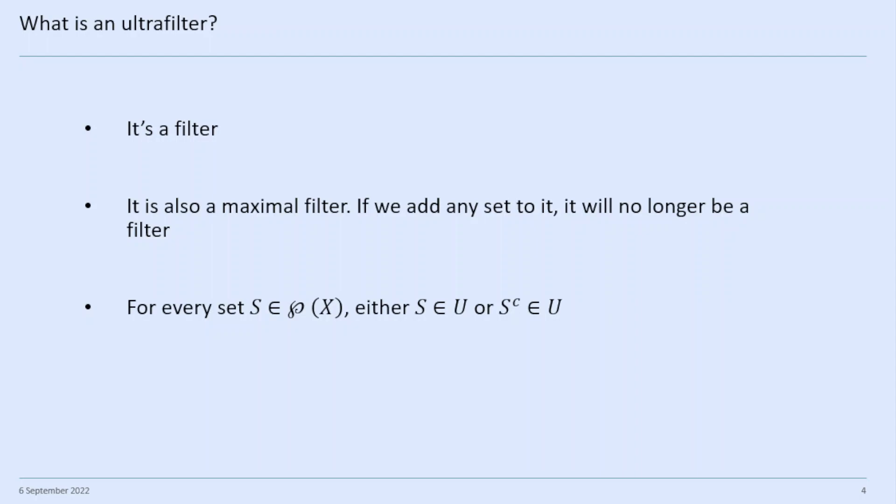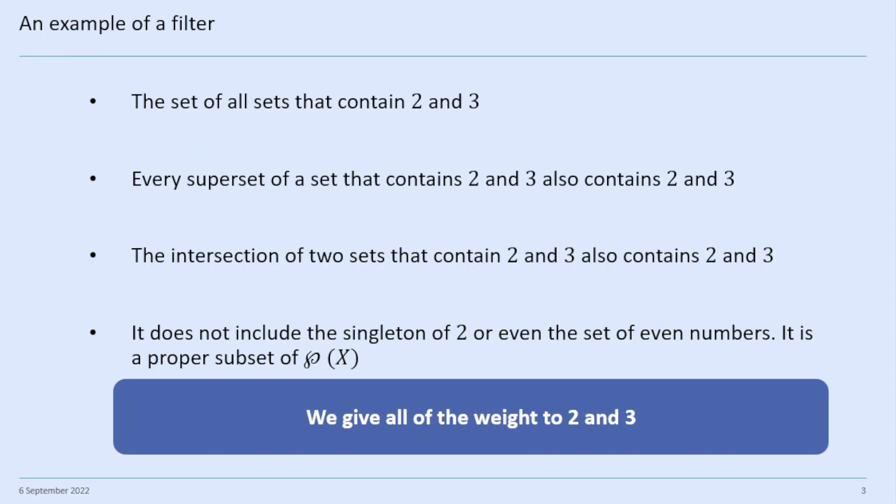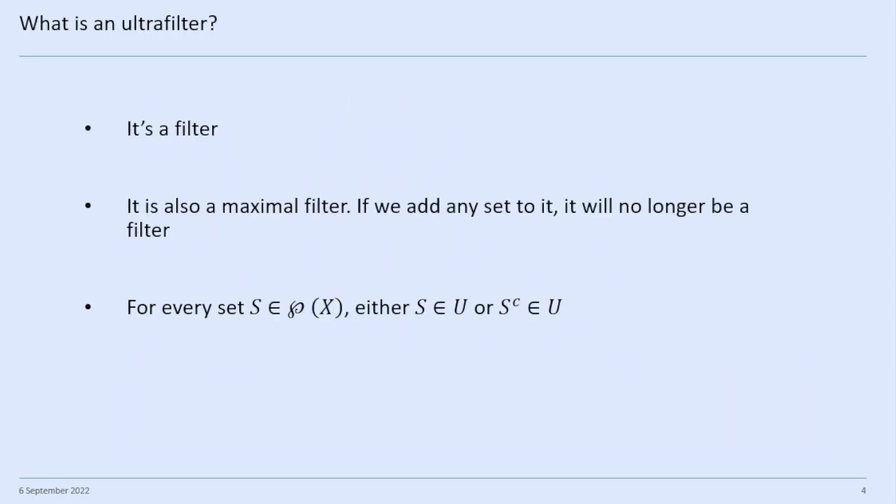So an ultrafilter is as big as it can get without falling apart — it's like a big raindrop that you can't add any more water to. And for an ultrafilter, for every set S in the power set, it's either in the ultrafilter or its complement is in the ultrafilter. That's not true of normal filters. For instance, the singleton of two is not in our example filter and its complement is not in the filter either, because its complement doesn't have two in it. So this filter is not an ultrafilter — it's not maximal.